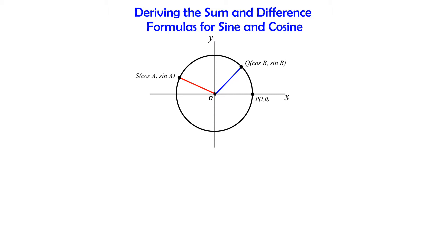I've already got a couple things set up here. We are on the unit circle, so the center is going to be at point O. Point P is at one comma zero, once again, one unit over from the origin. Then I have point Q, and point Q is going to represent line segment OQ. The angle we're going to be looking at is angle B. From the unit circle, the ordered pair would be cosine — that's adjacent over hypotenuse — but the hypotenuse has a value of one, so the ordered pair is cosine of angle B, comma sine of angle B.